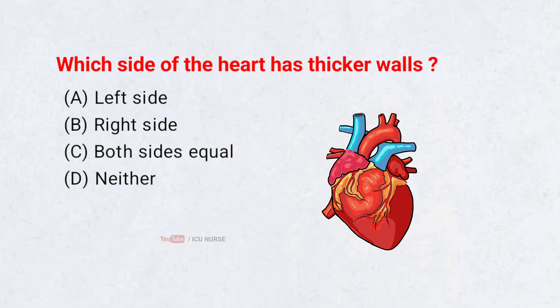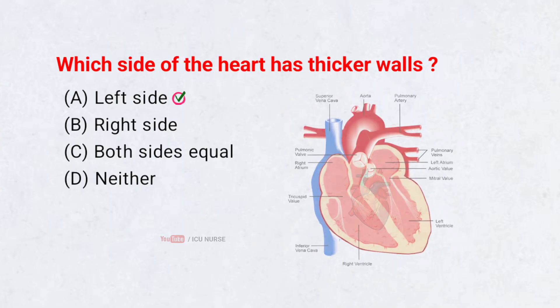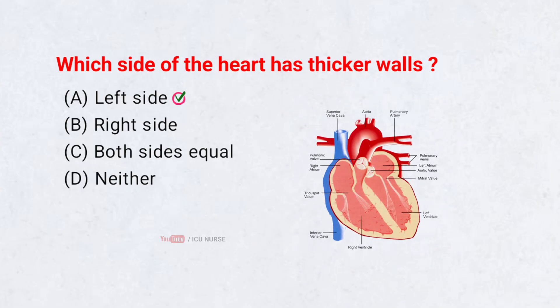Which side of the heart has thicker walls? Correct answer A: Left side. The left ventricle has thicker walls because it pumps blood to the entire body under high pressure.